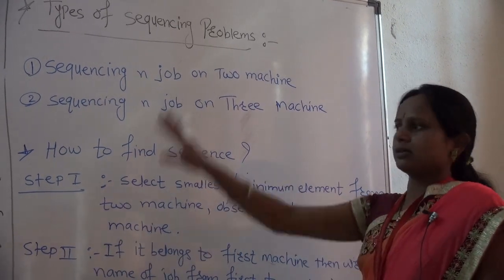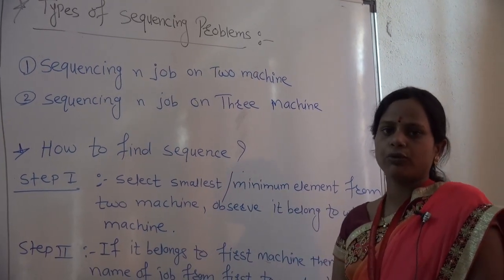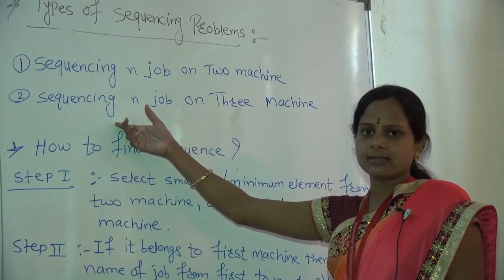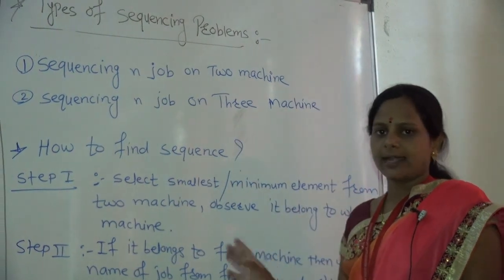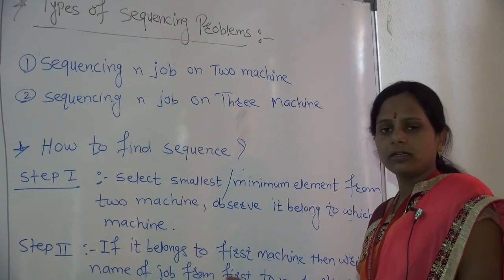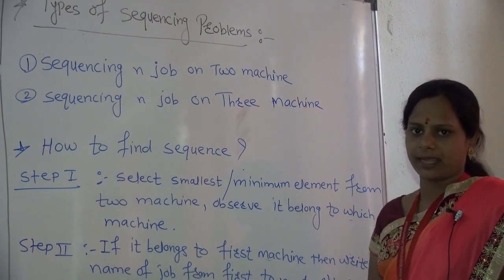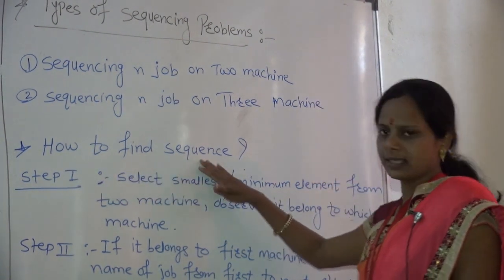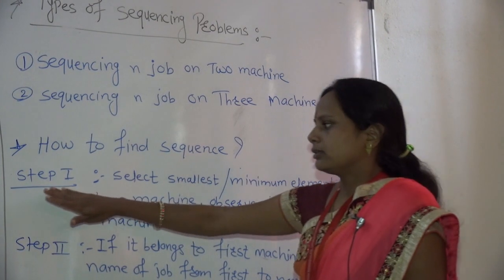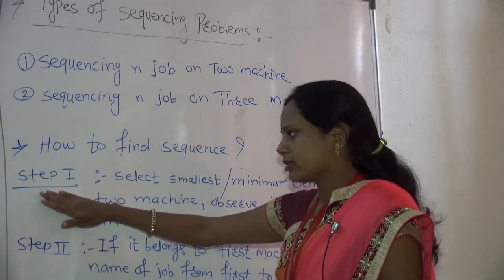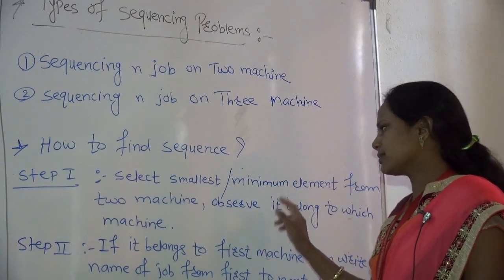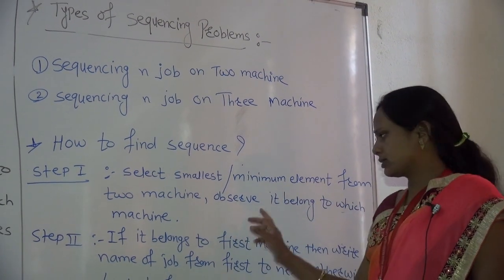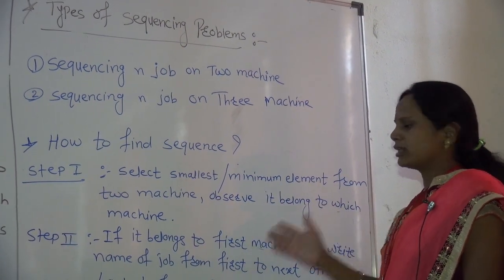In the total sequencing problem, what do you have to find out? First, you find the sequence. Second, the idle elapsed time. Third, the total minimum elapsed time. So first of all we study how to find the sequence. How to find the sequence? There are two steps.